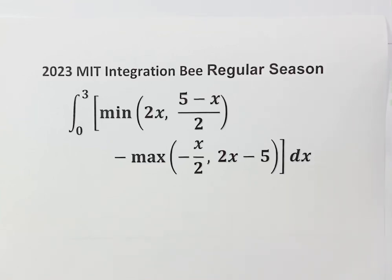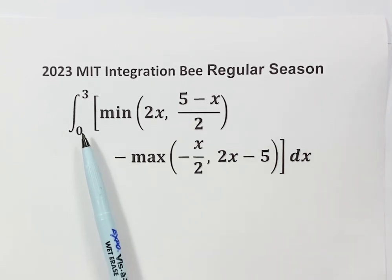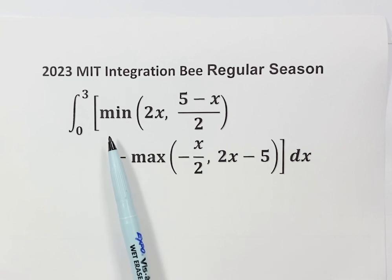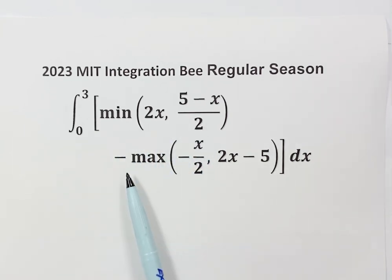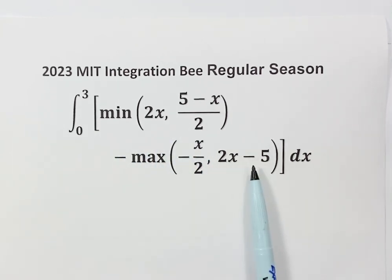In this video, we will be evaluating the integral. It's from the 2023 MIT Integration Bee. The integral is from 0 to 3 of a minimum of two functions minus the maximum of another two functions.